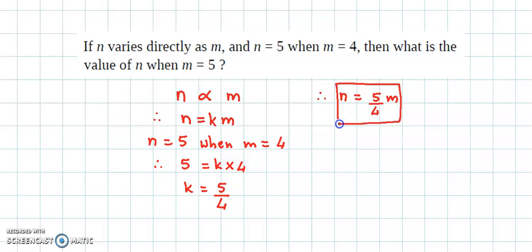Now using this equation, we can find the missing value. What is the value of n at m equal to 5? So we just substitute m as 5. We have n is equal to 5 by 4 times 5, that is 25 divided by 4.